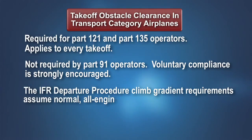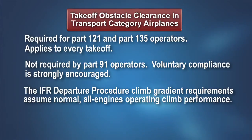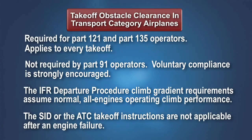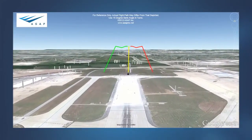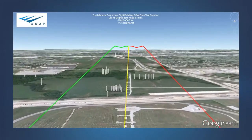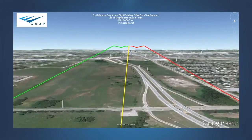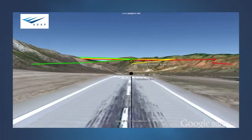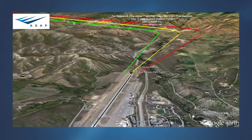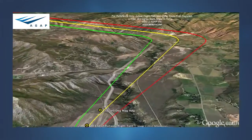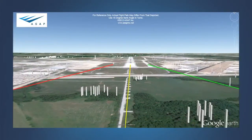The climb gradient requirement published in a standard instrument departure or an obstacle departure procedure assumes normal all-engines-operating performance — demonstrating that the airplane can meet these climb requirements after an engine failure is not required. If the engine fails on takeoff at or above V1 speed, fly the engine failure procedure; the SID or the takeoff climbout instructions received from ATC are no longer applicable. Advise ATC of your intentions when it is safe to do so. As we have seen in this presentation, the determination that safe takeoff obstacle clearance can be achieved following an engine failure is not an easy task. Ask yourself: can I perform this assessment before each takeoff? Do I possess the training, the tools, and the skills to analyze the engine-out performance of my airplane?